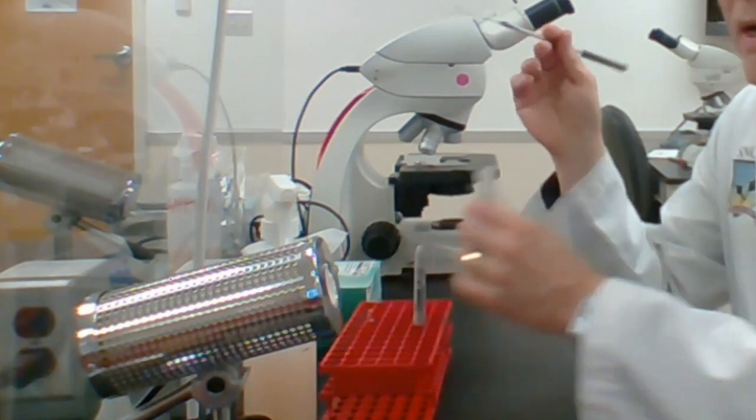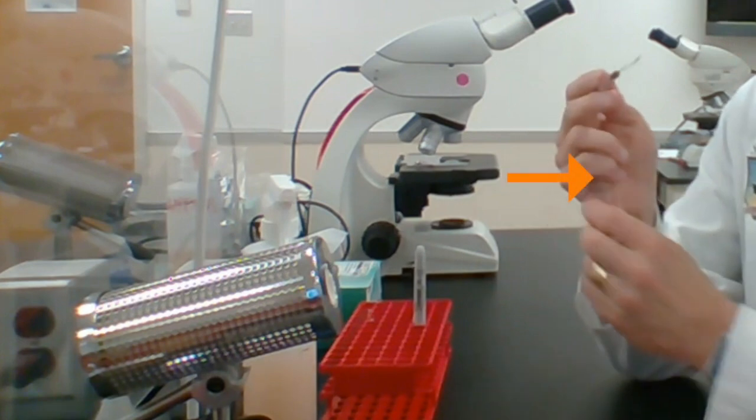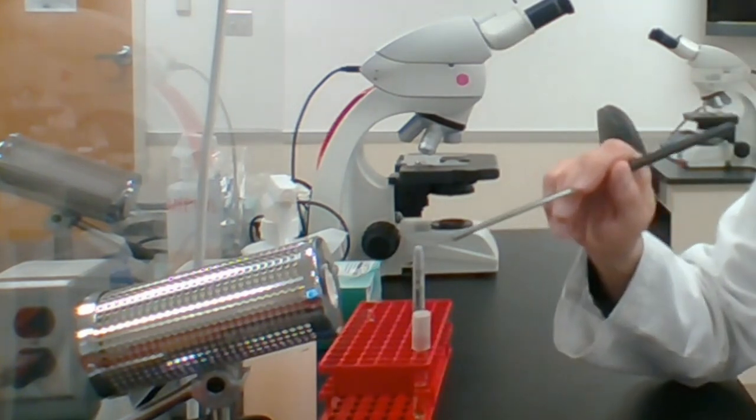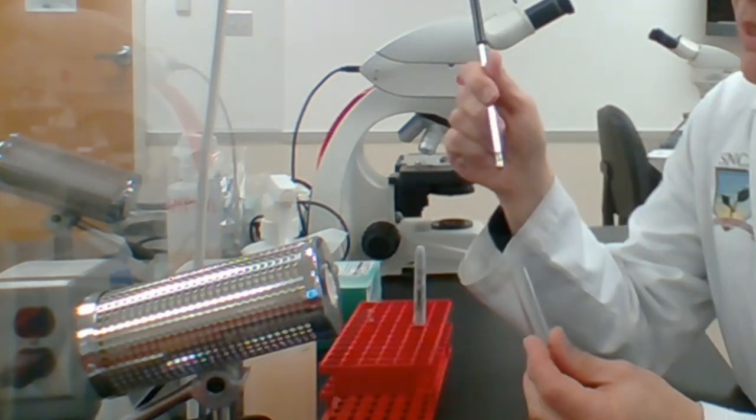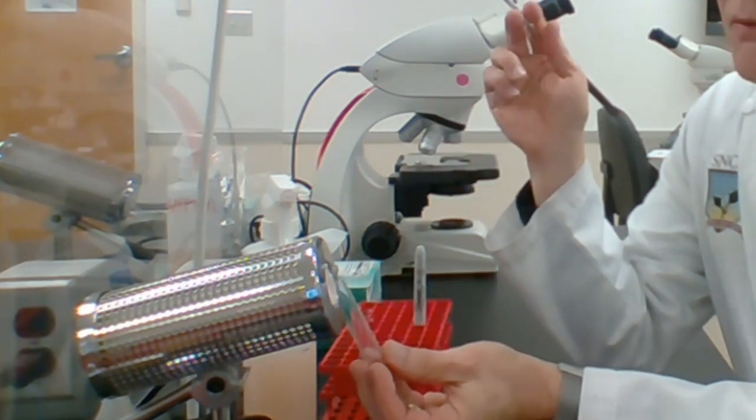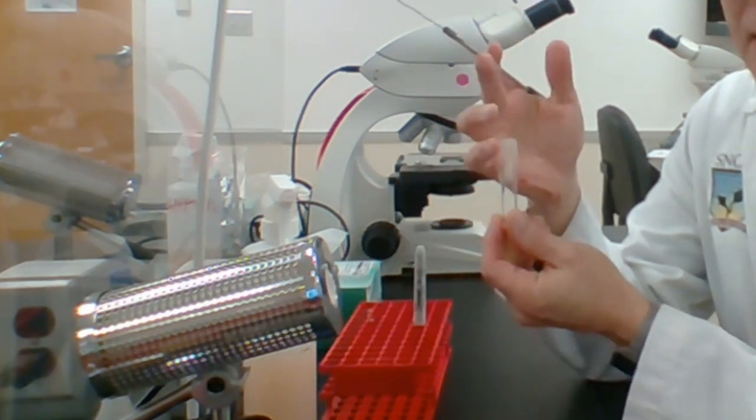The cap is removed from the tube by the pinky of the dominant hand and the mouth of the tube is flamed. The transfer tool is sterilized and placed into the tube to pick up bacteria. Then the tube is flamed again and the cap replaced before it is set back in the rack.